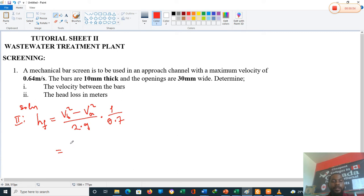we've calculated the velocity between bars as 0.85 squared minus 0.64 squared, all that over